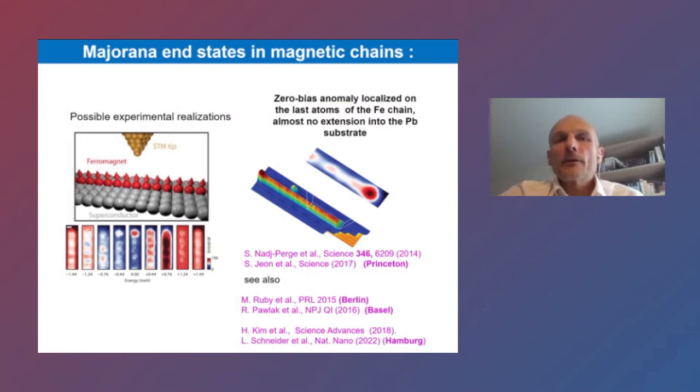There was a series of experiments by the Princeton group, Berlin, Basel, and more recent one by the Umber groups, where they consider iron chains or wires on top of the superconductor. At the extremities of the chain, Majorana bound states, or evidence or signature of Majorana bound states as zero bias peaks were shown. This raises a lot of interest in the community, and this pushes us to maybe have a better understanding of the basic cornerstone of this proposal, the single impurity.